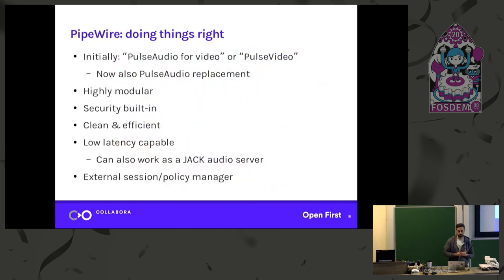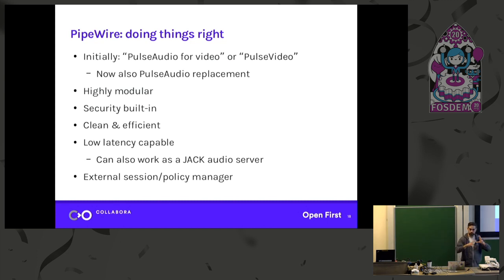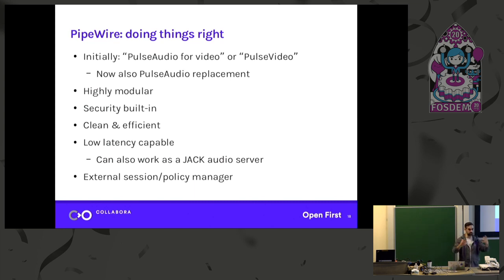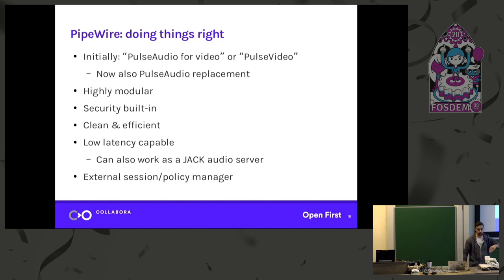PipeWire actually started from providing a PulseAudio for video — it was initially called Pulse Video. So it can handle video data very well; that's its original purpose. Nowadays it also implements routing audio data, and it's evolving to become a PulseAudio replacement. It is modular, so you can customize it a lot. It has built-in security — something PulseAudio didn't have. There is access control per application, per device — you can give certain applications access to do certain things and not others. It's very clean code and much more efficient than PulseAudio. It's capable of doing low-latency audio, and it actually implements the JACK API, so you can also work as a JACK audio server.